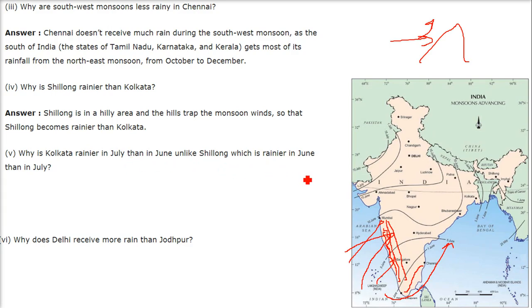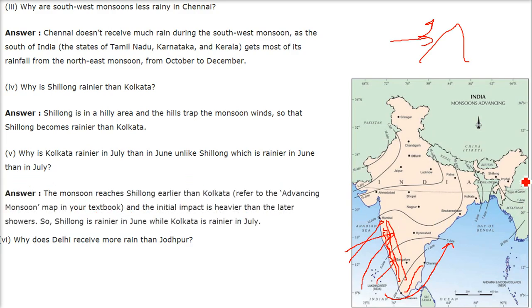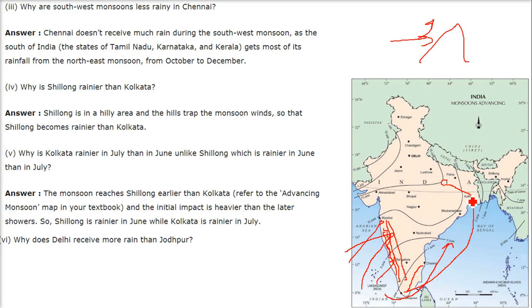Why is Kolkata rainier in July than in June, unlike Shillong which is rainier in June than in July? The reason is the monsoon reaches Shillong earlier than Kolkata — it arrives on 1st June at Shillong, and the initial impact is quite heavy (monsoon burst). While when the monsoon bends down to reach Kolkata it takes quite some time, so Kolkata is rainier in July rather than in June.